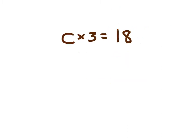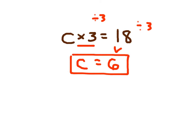Another type of problem: c times 3 equals 18. We see this times 3, and that's what we look at to figure out the inverse operation. c times 3 — so we divide by 3. On the left-hand side, I'm taking c, multiplying it by 3, then dividing it by 3, which are inverse operations. That just leaves us with c. 18 divided by 3 is 6, so c equals 6 is our solution.